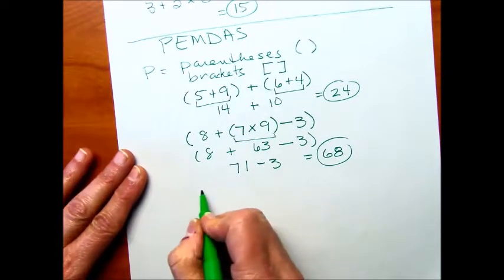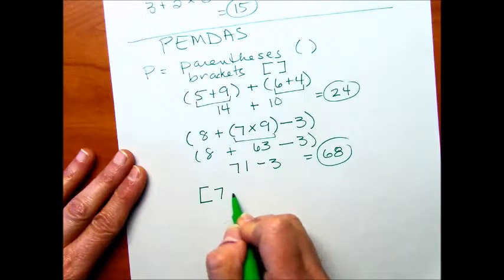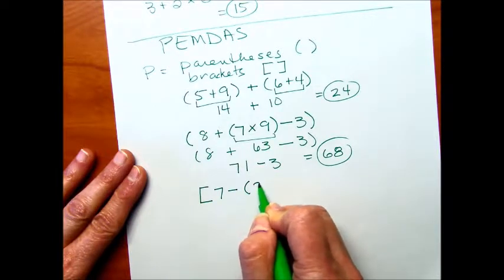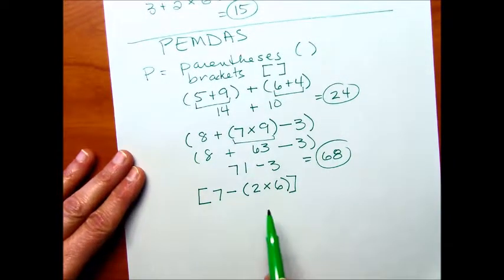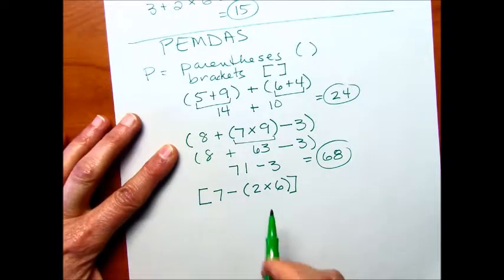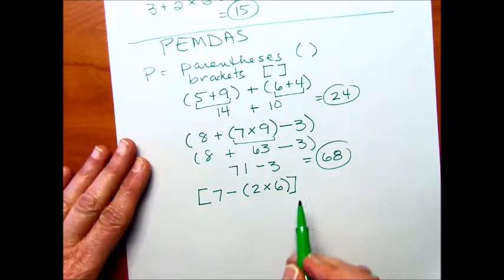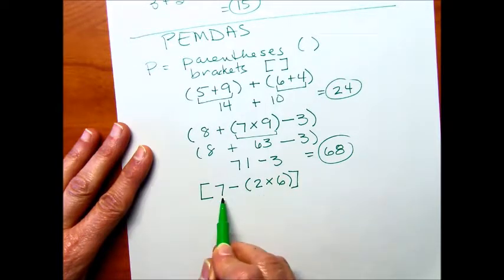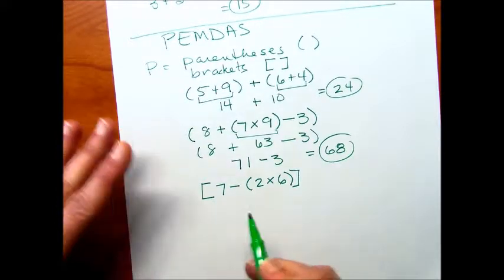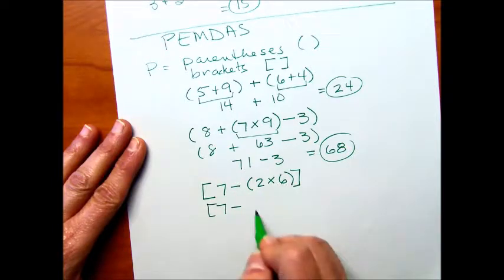Let's do one with brackets and a set of parentheses. So we've got a bracket, 7 minus, and then some parentheses here, 2 times 6, and a closing bracket. So again, this is kind of like this second problem that I did. I could have used parentheses, but I chose to use brackets. And again, I want to solve what's inside the innermost quantity before I subtract it from the next level within the brackets. So I'm just going to rewrite 7 minus, and then 2 times 6 is 12.